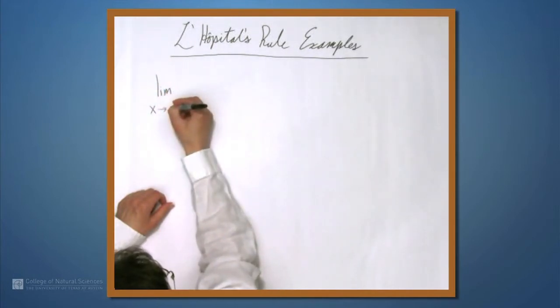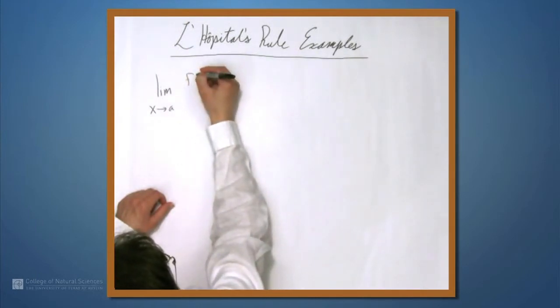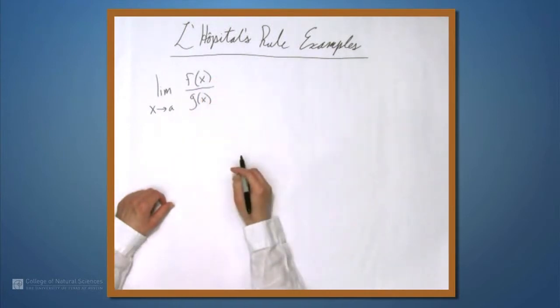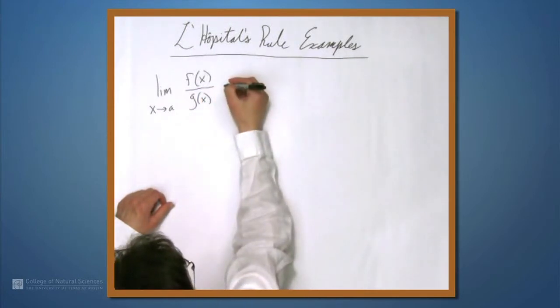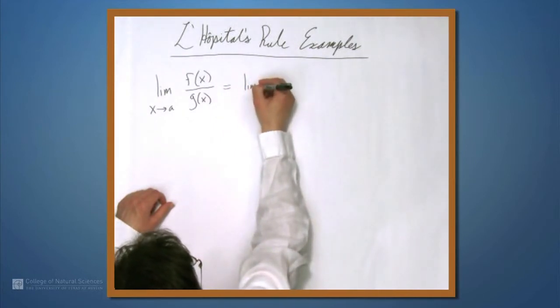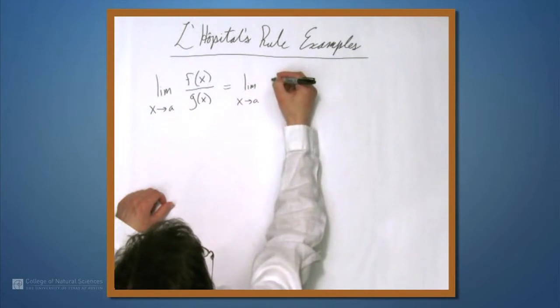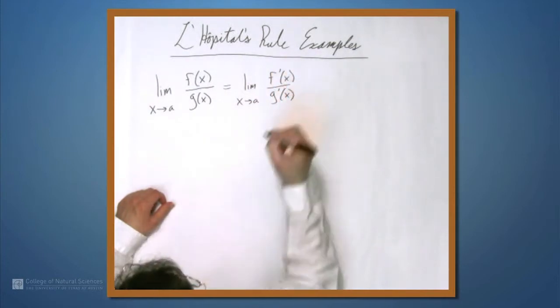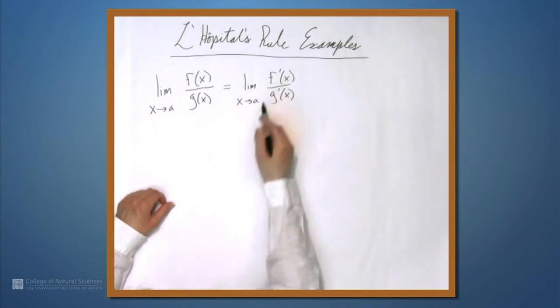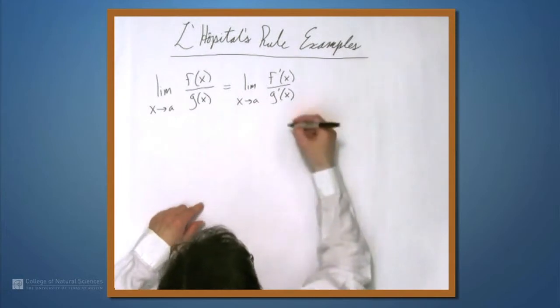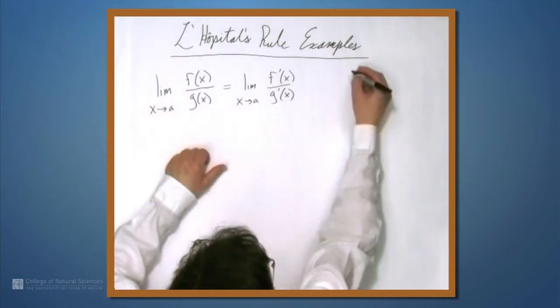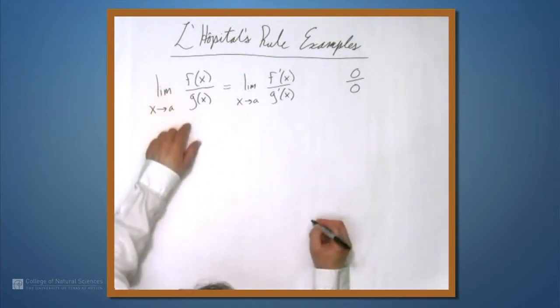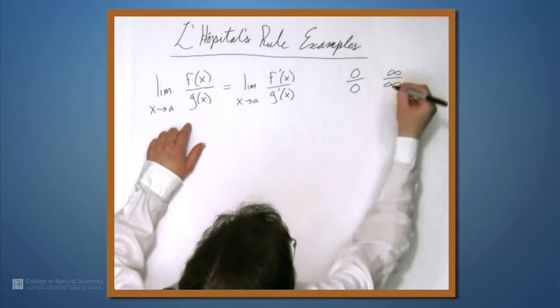So let's just remind ourselves about what L'Hopital's rule says. It says that if you have the limit as x approaches a of f over g, and f and g are differentiable, then this is the same thing as the limit as x approaches a of f' over g'. So we can take the derivative of f and g and we get the same thing. As long as f and g are both going to zero, so we have the indeterminate form zero over zero.